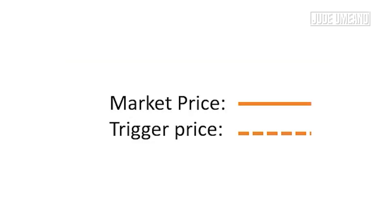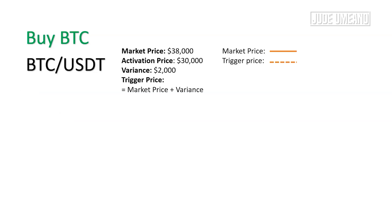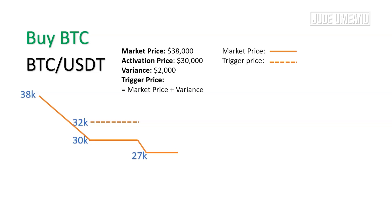I want to represent the market price with the solid line and the trigger price with the dotted line. The price of Bitcoin falls from $38,000 to $30,000 — at this activation price the trailing order is activated, so the trigger price is $32,000, which is $30,000 plus $2,000. If Bitcoin falls further to $27,000, the trigger price would be $29,000. If it falls further to $24,000, the trigger price would be $26,000.